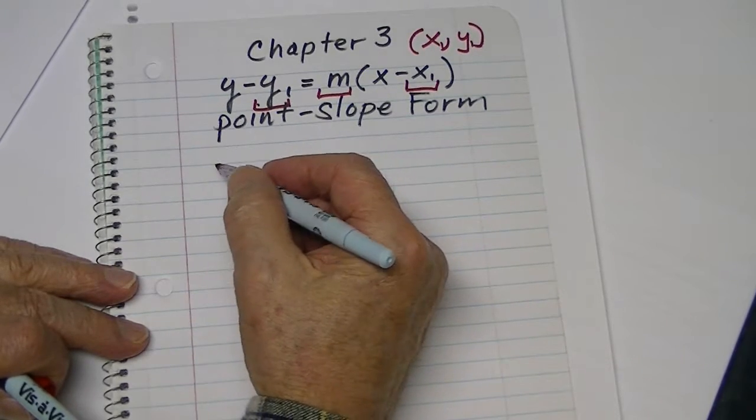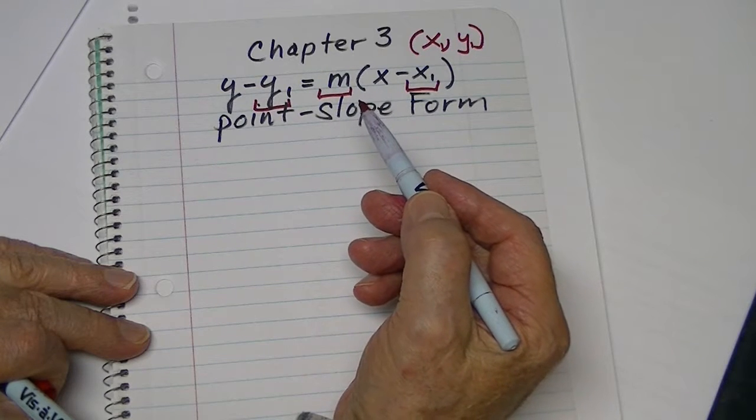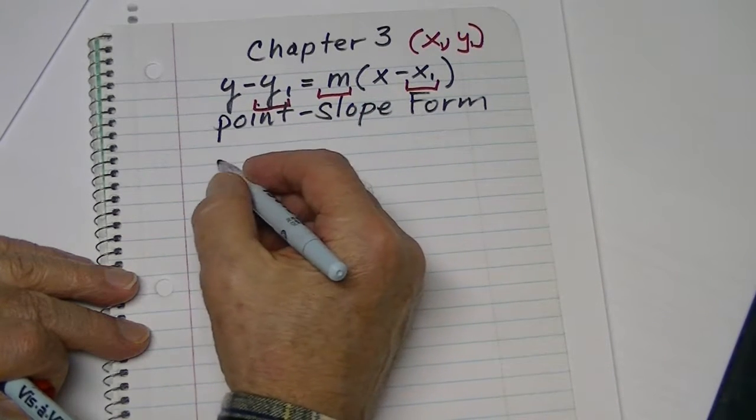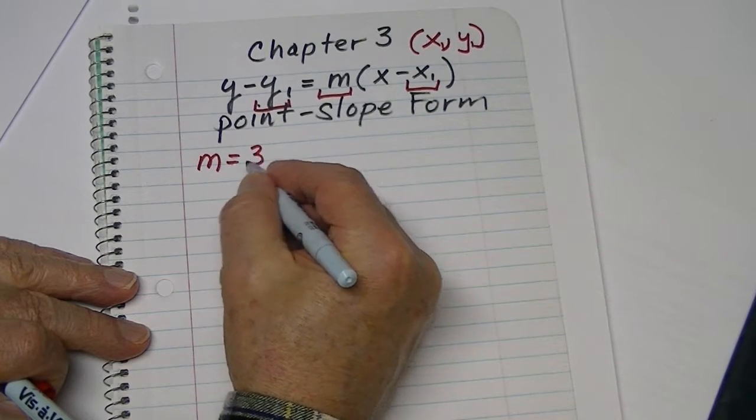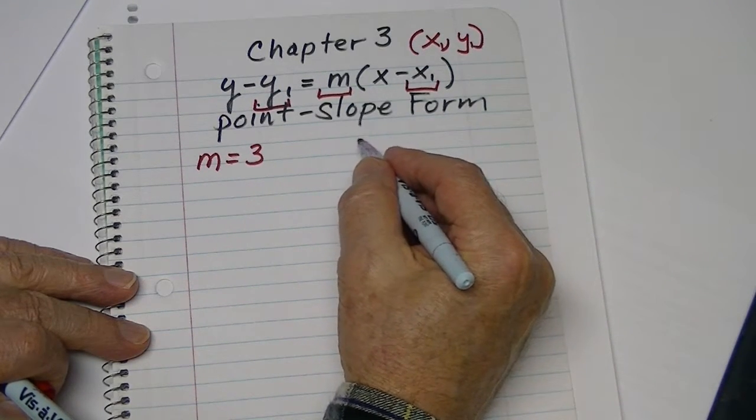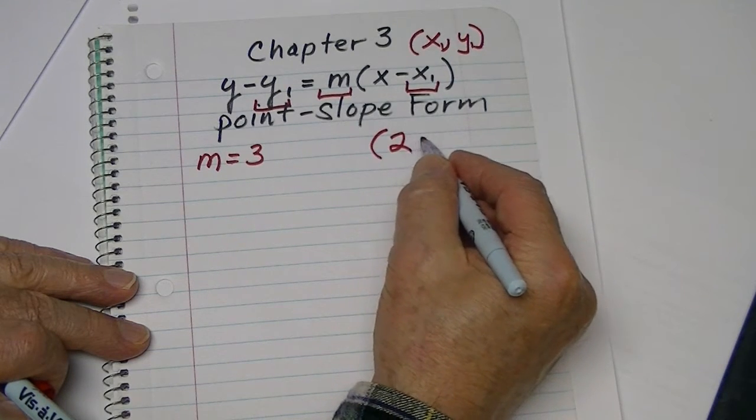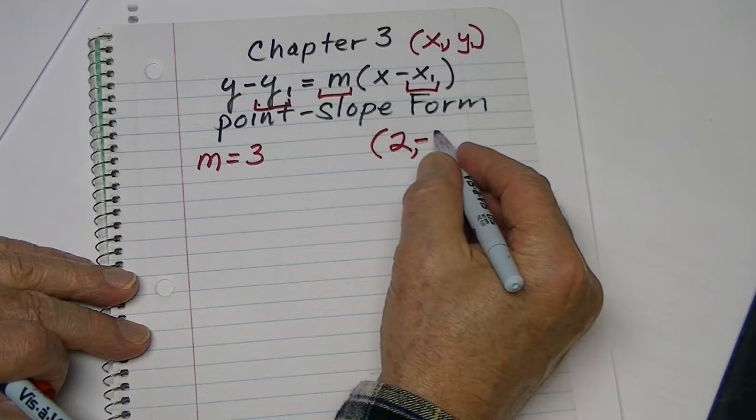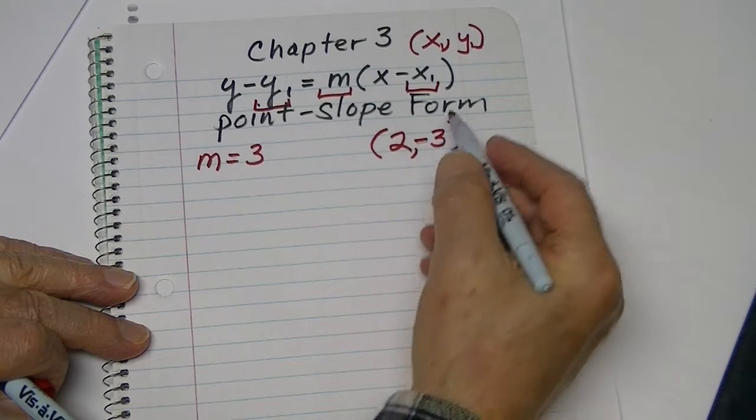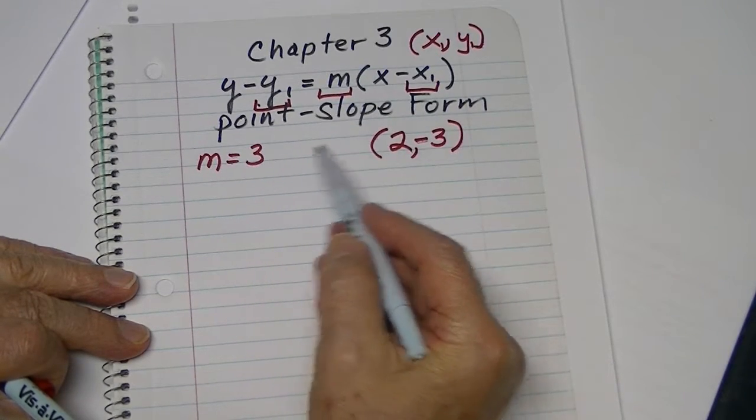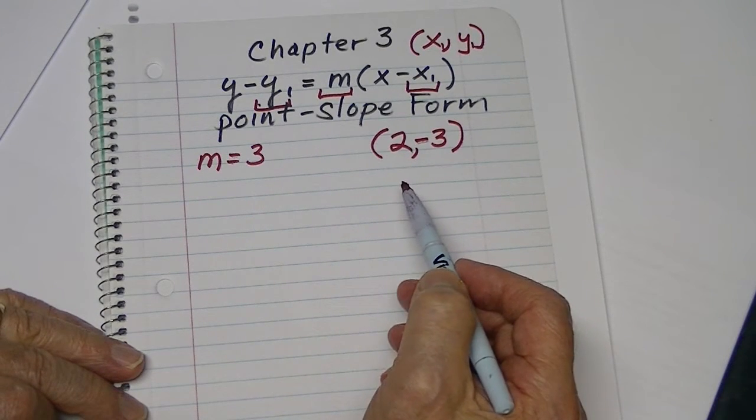So if we have an equation, this is our equation, but if we want to make an equation and we know the slope, let's say the slope is 3, and we have one ordered pair, which is 2 and a negative 3, one ordered pair, and we know the slope of our future equation, what will that equation be?